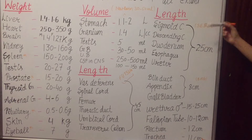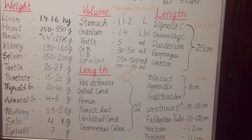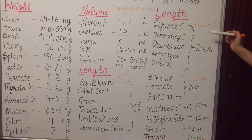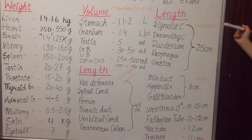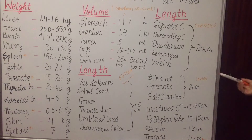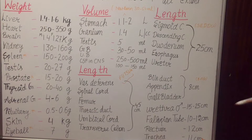Sigmoid colon, descending colon, duodenum, esophagus, and ureter length is 25 centimeter. You can remember this by the mnemonic starting with D for duodenum, D for descending colon, U for ureter. Bile duct, appendix, and gallbladder length is 8 centimeter — remember this by 'BAG': B for bile duct, A for appendix, G for gallbladder.